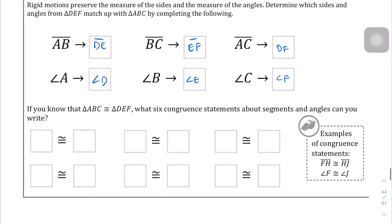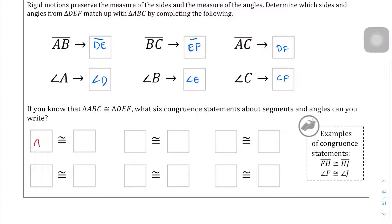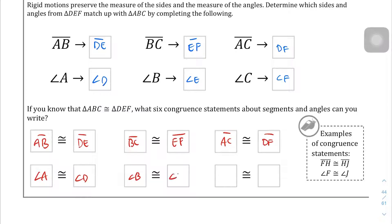Now we write the congruency statements — there are six of them, because there are three sides and three angles. Side AB is congruent to side DE. Side BC is congruent to side EF. Side AC is congruent to side DF. Angle A is congruent to angle D. Angle B is congruent to angle E. And angle C is congruent to angle F.